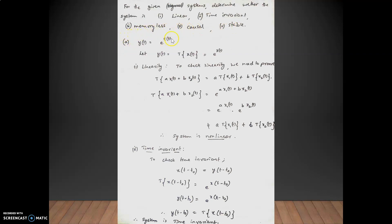The first problem, part (a), is given as the continuous time signal y(t) = e^x(t). For this given continuous time system, we have to verify whether it is linear or non-linear, time invariant, memoryless, causal, and stable. Here y(t) acts as a system, so we can write y(t) = T{x(t)}, where the operator T is exponential.